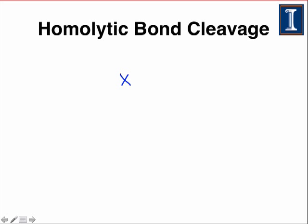Let's begin by looking at homolytic bond cleavage from a curved arrow perspective. If we take a general compound that has a bond X–Y, the homolytic cleavage of this bond is just the breakage of the bond giving one electron each to each of the atoms involved. This forms two radicals, X-dot and Y-dot.